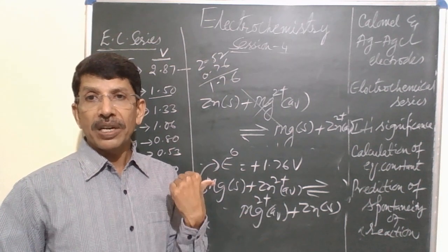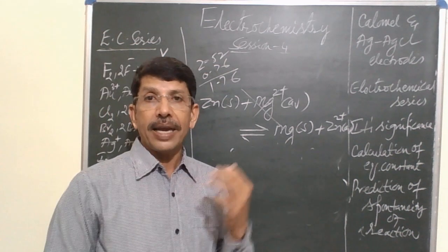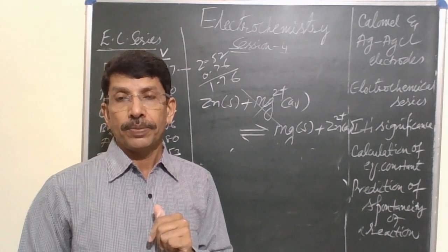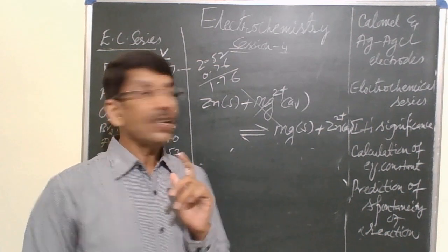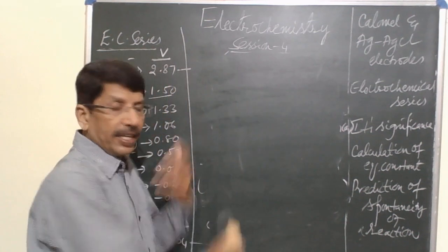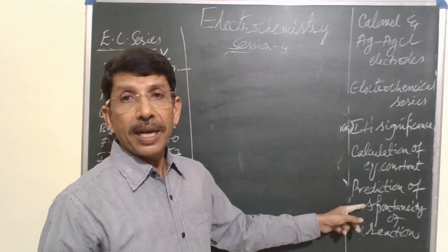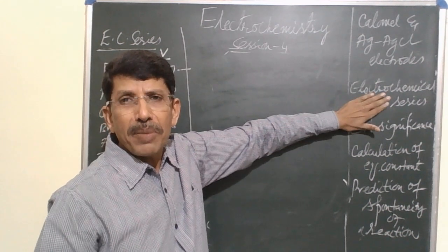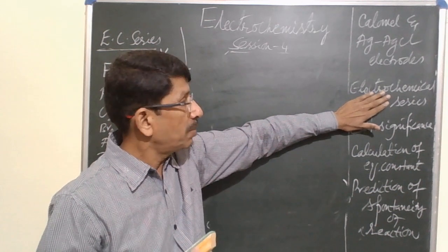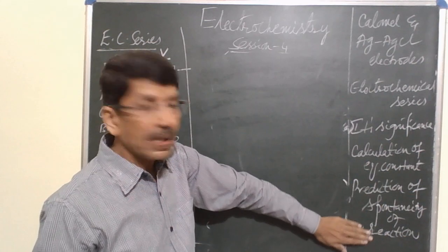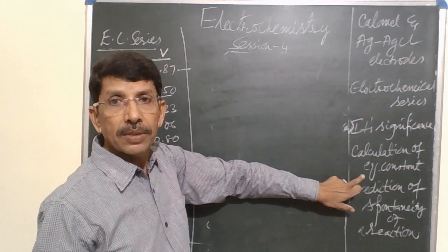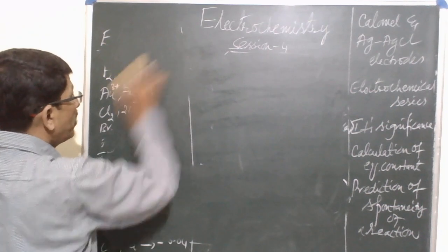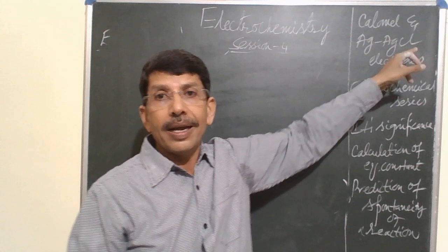If E° for a reaction is positive, the reaction is spontaneous; if E° is negative, the reaction is non-spontaneous in the forward direction but spontaneous in the backward direction. So we can predict the spontaneity of a reaction by calculating its E° value. After discussing electrochemical series and its applications — comparison of oxidizing/reducing power, calculation of equilibrium constant, and prediction of spontaneity — we will now go back to the construction and working of calomel and silver-silver chloride electrodes.